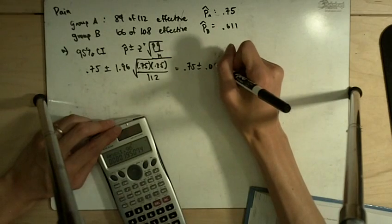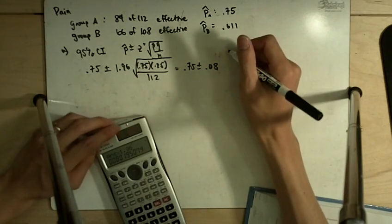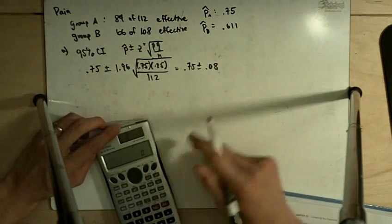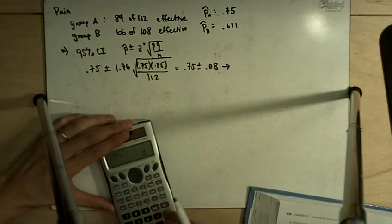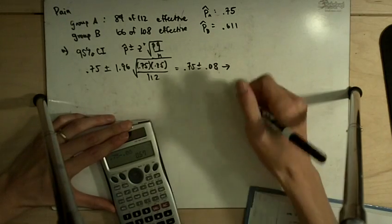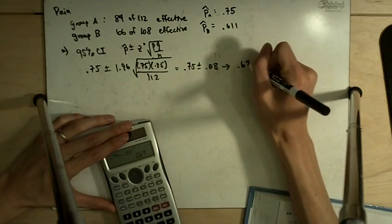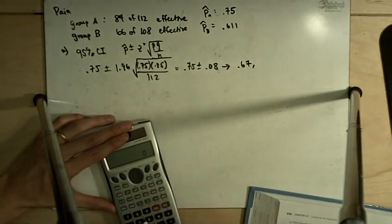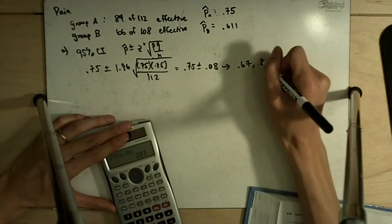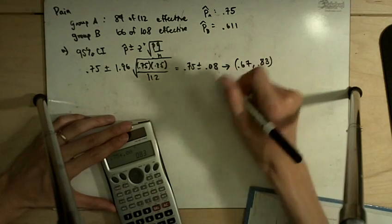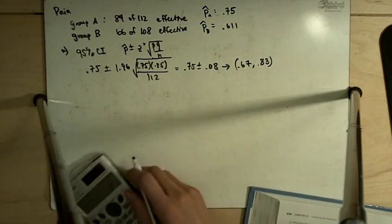So you have 0.75 plus or minus 0.08. And that gives me, on the lower end, 0.67. And on the upper end, 0.83. That's my 95% confidence interval.